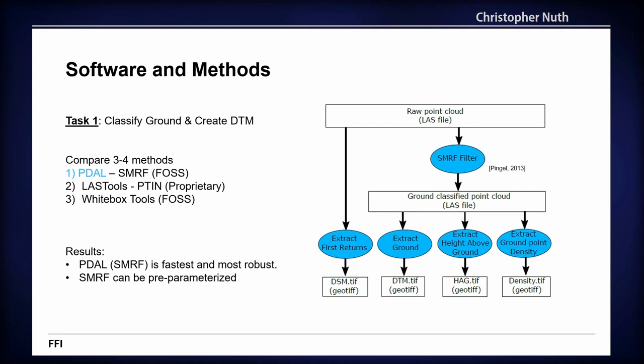Even though all DEMs are already created, we decided to do it ourselves. We take the raw point cloud through the SMRF filter and get ground-classified points, producing four products: a surface model, a terrain model, a height-over-ground model, and a density model. We also compared LAStools PTIN and WhiteBox tools. Our finding is that the SMRF filter is the fastest and most robust — you can pre-parameterize it based on your topography, making it really automated if you know the parameters for your terrain type.